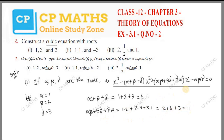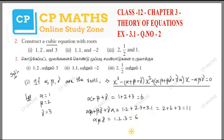The last term is the product of all three roots: alpha beta gamma equals 1 into 2 into 3. Multiplying gives 6.